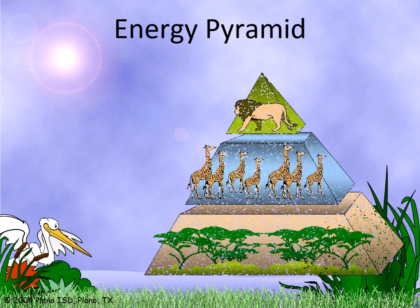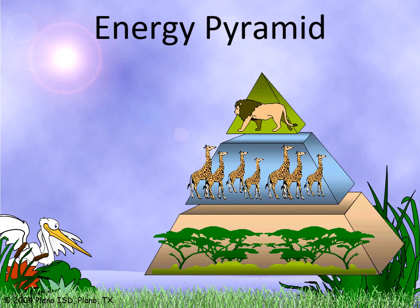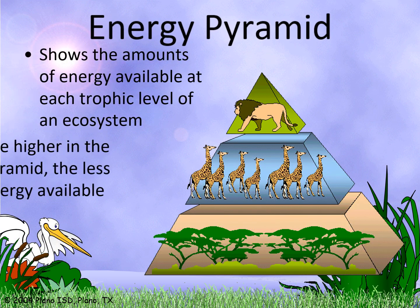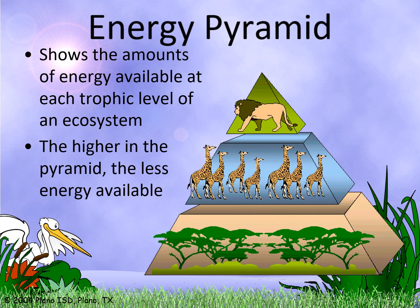The energy pyramid shows the amount of energy available at each trophic level of an ecosystem. The higher in the pyramid, the less energy is available.